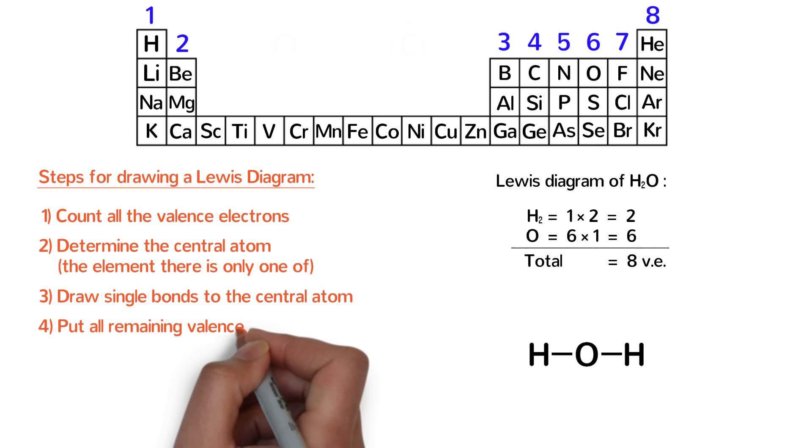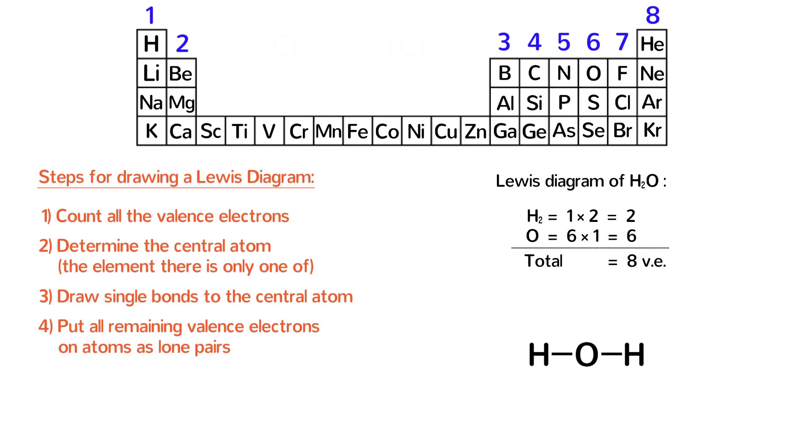Step 4. Put all of the remaining valence electrons on atoms as lone pairs. For H2O, we start with eight valence electrons. We have used four electrons for the two single bonds, so that leaves four more electrons left over. We put all four of these remaining electrons on oxygen instead of hydrogen because hydrogen is already happy with two valence electrons. Remember, never give hydrogen more than two valence electrons. Everyone else wants eight valence electrons, but hydrogen only wants two.